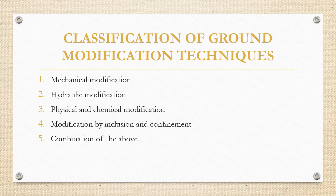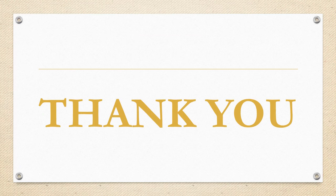Modification by inclusion and confinement involves providing inside reinforcement for the soil. Methods used include ground anchoring, rock bolting, and soil nailing. We can also use a combination of any of these methods. In summary, mechanical modification is compaction; hydraulic modification is drainage and dewatering; physical and chemical modification is soil stabilization by admixtures; and modification by inclusion and confinement uses ground anchoring, rock bolting, or soil nailing.